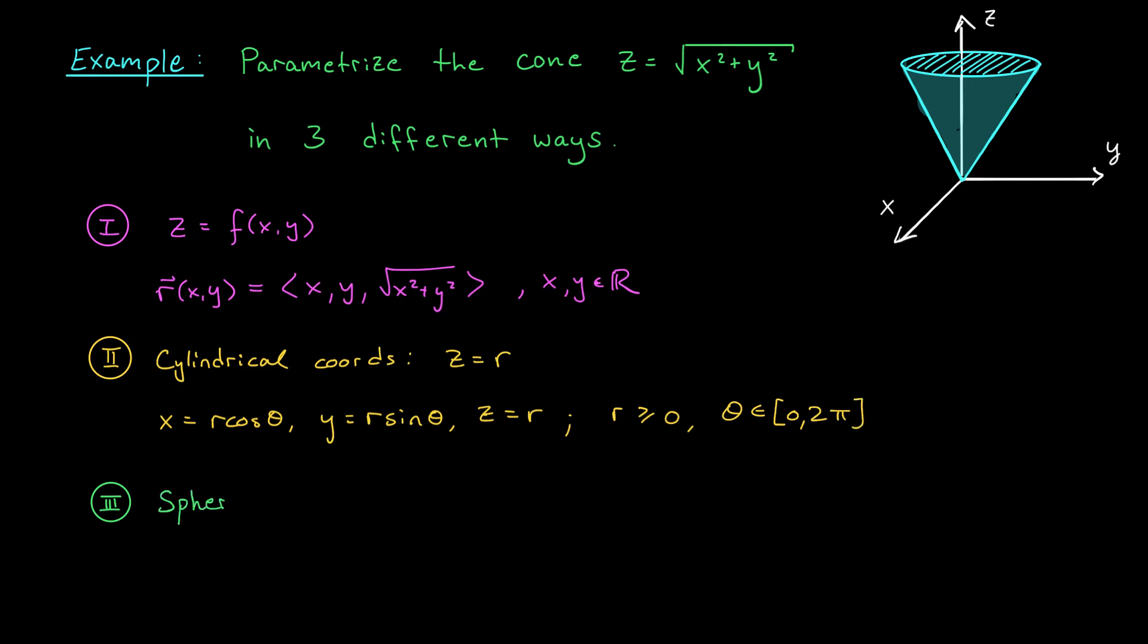Finally, we could have written our equation in spherical coordinates. This cone consists of all points that make an angle of π over 4 with the positive z-axis. So we could write it simply as φ equals π over 4. Using our conversion formulas, we get x equals ρ sine φ cos θ. But of course, φ is π over 4. So this is root 2 over 2, ρ cos θ. Y is going to be ρ sine φ sine θ. And again, we replace φ to get root 2 over 2, ρ sine θ. And finally, z is ρ cos φ. We replace φ to get root 2 over 2, ρ.